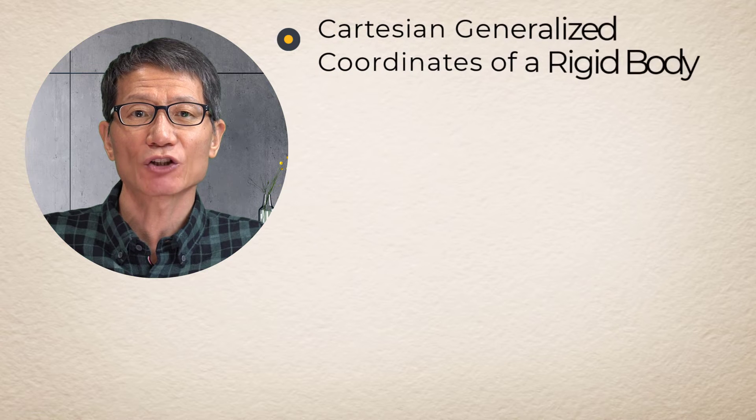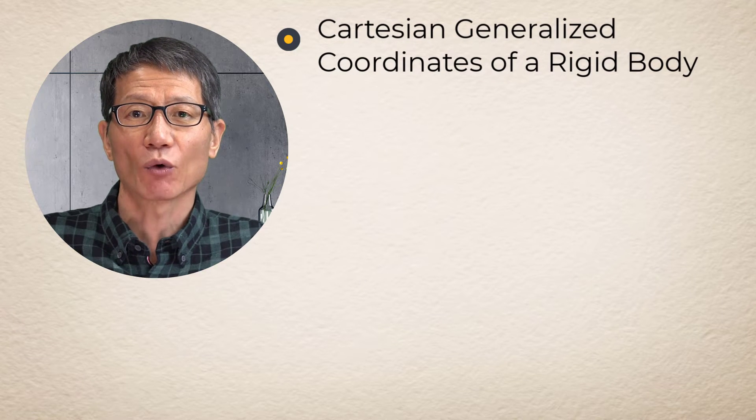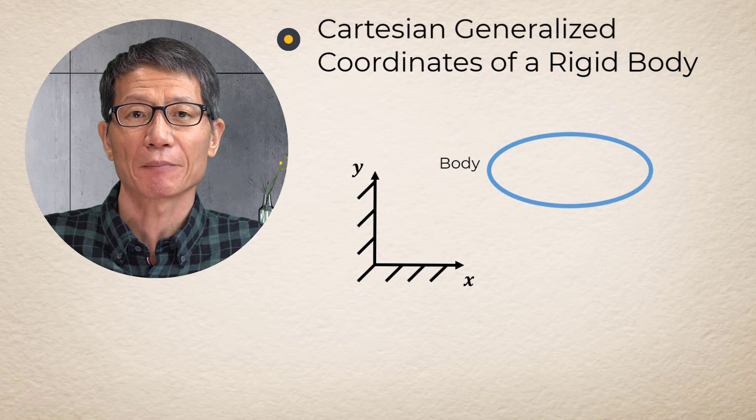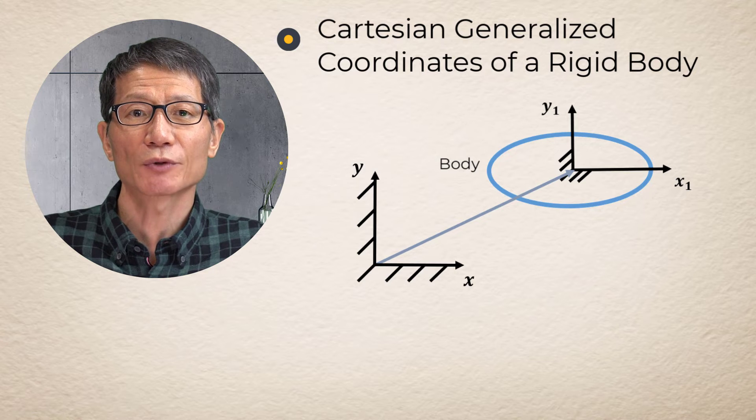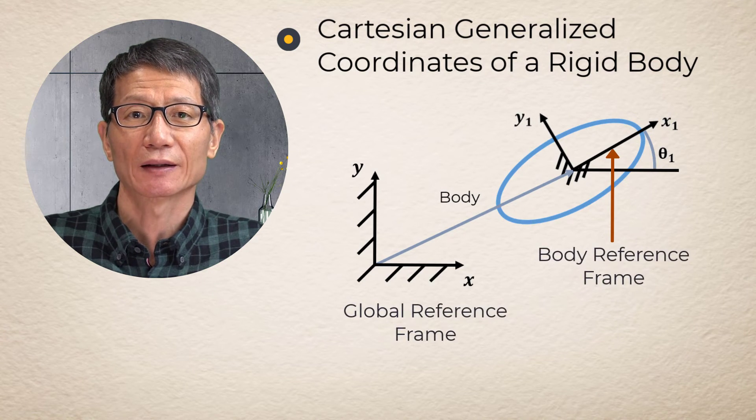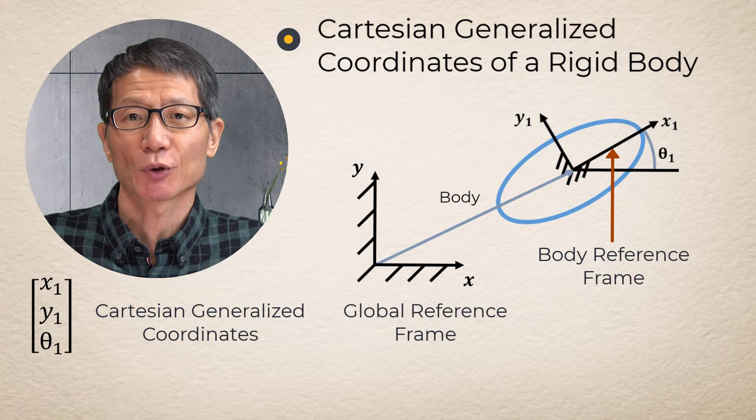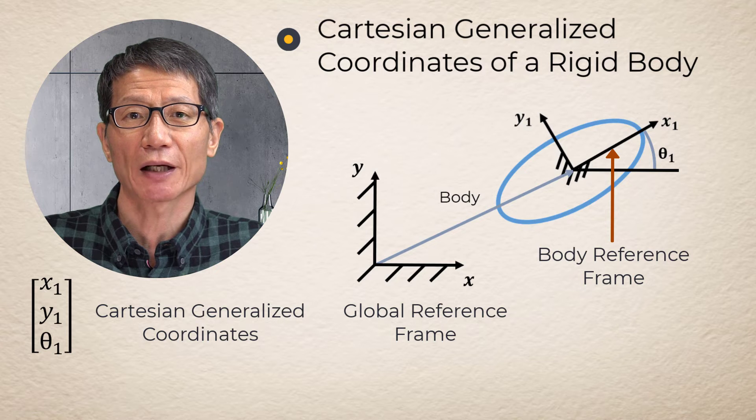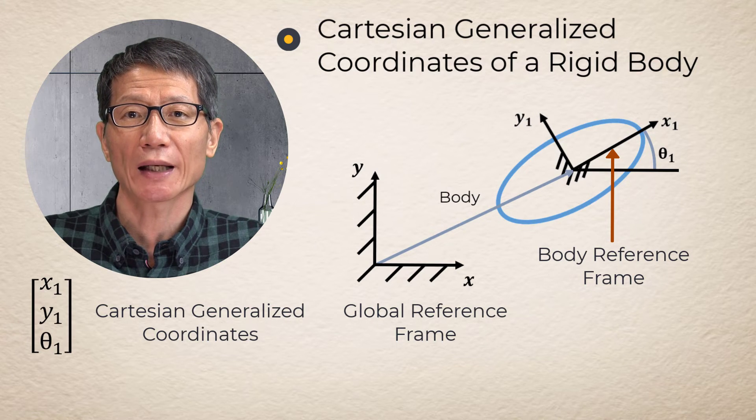The origin of a rigid body can be located by two variables x and y. Orientation of the rigid body can be identified by one angle zeta. Cartesian generalized coordinates is defined by combining position and orientation variables as a vector containing x, y, and zeta.